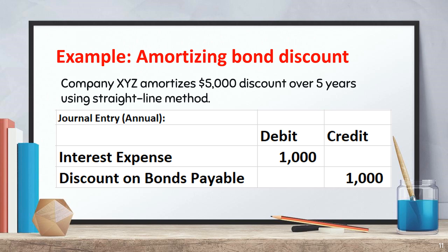On the balance sheet, cash decreases by $5,000 and equity decreases by $5,000. Now let's talk about amortizing bond discount over the bond's life — this spreads the impact over time. Example: Company XYZ amortizes a $5,000 discount over five years using the straight-line method. Journal entry made annually: debit interest expense $1,000, credit discount on bonds payable $1,000.